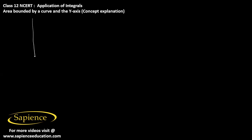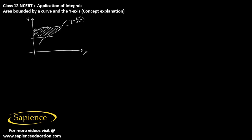Here we have to explain the concept of area bounded by a curve and the y-axis. Suppose this is the y-axis and this is the x-axis, and we have a function y equals f of x. We need to find the area of this region, which is bounded by the curve and the y-axis, in between two horizontal lines.